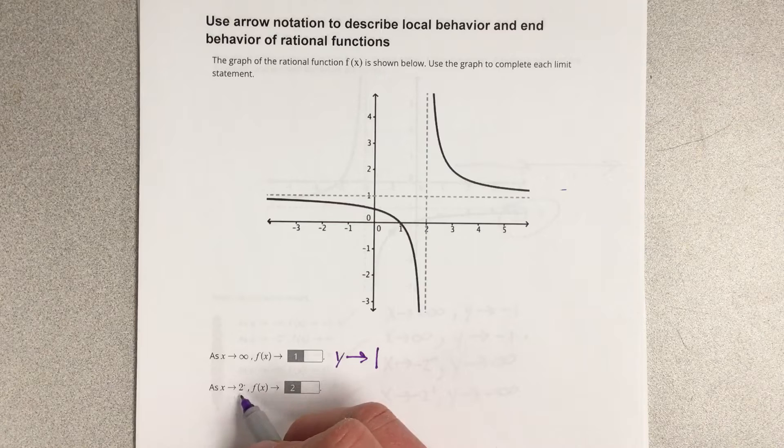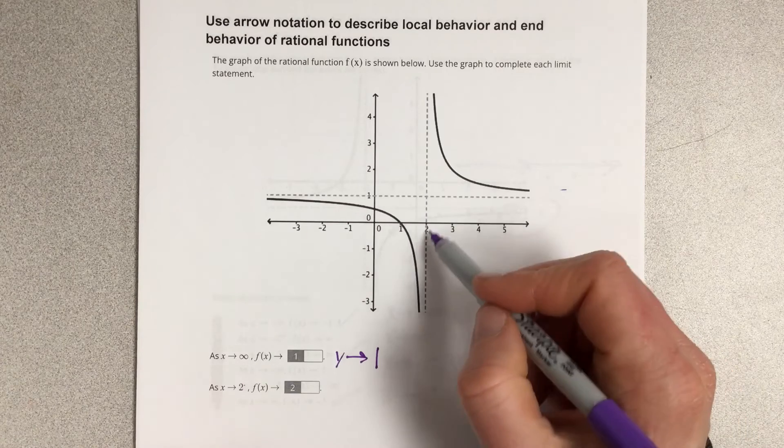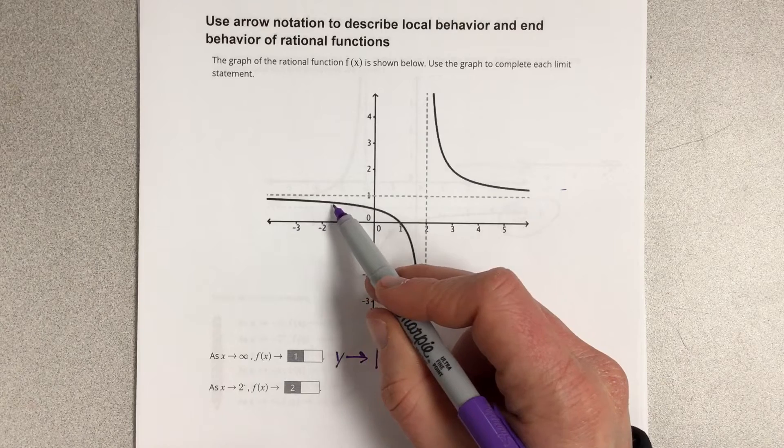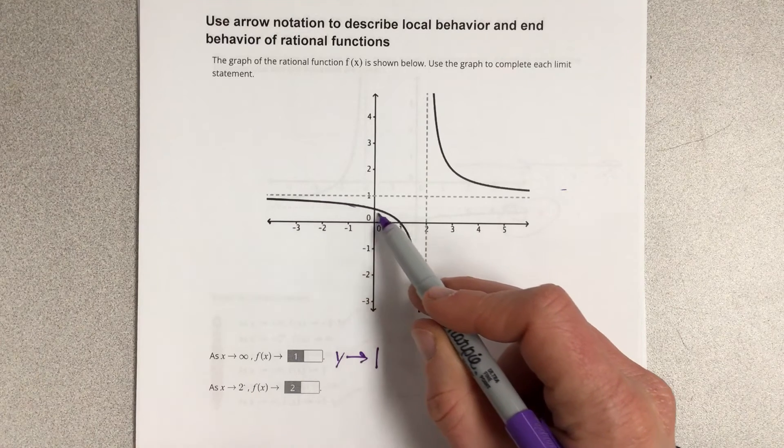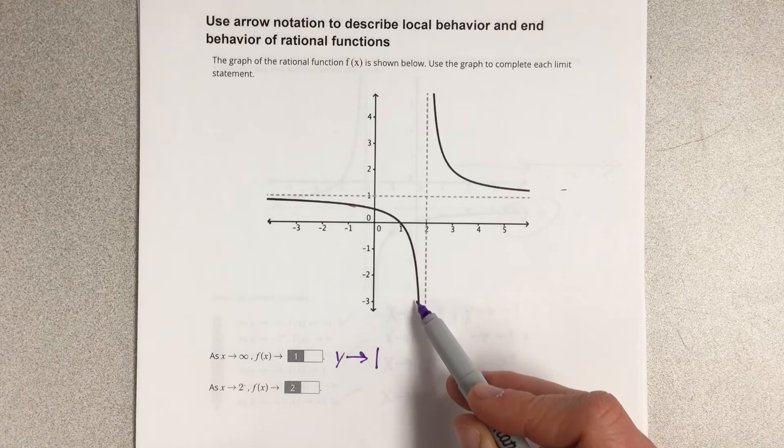As x approaches 2, and it says a negative sign there, so I'm approaching 2 here, but I'm doing it from the left. So I come down this line, I'm approaching it from the left. What is the y value approaching?